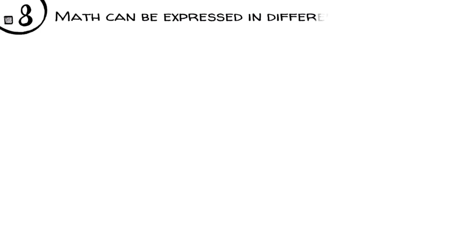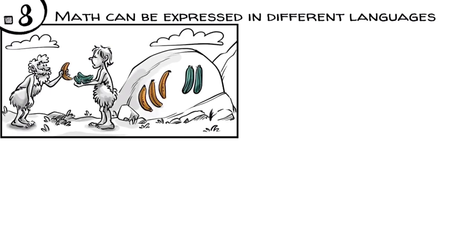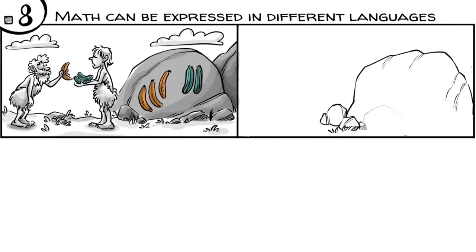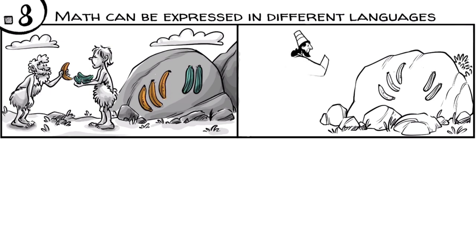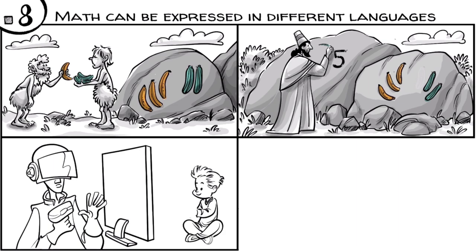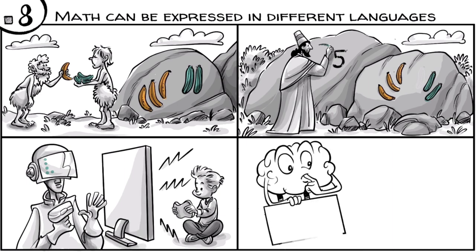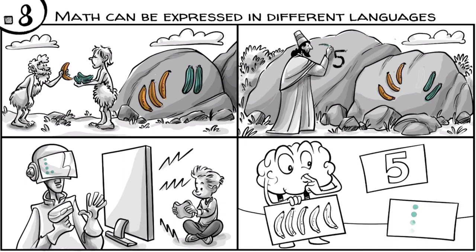Math can be expressed in different languages. A hundred thousand years ago, we used objects to express our mathematical thinking. Later, we used images. Around one thousand years ago, we began to reduce images to Arabic numeral symbols. In future, we might replace symbols with bits or express math in graphic simulations or games. In other words, while math thinking always happens in our heads, the language that represents our thinking is evolving.